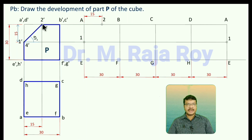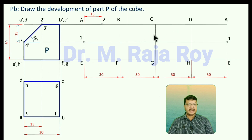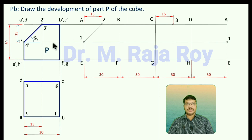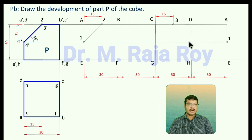For point 3-dash, it is in between CD. From C, the distance is again 15. From C you mark 15 distance and mark point 3. Join points 1 and 2, and 2 and 3. For the fourth point, it is on DH. Along the locus line on DH, you get the fourth point. Mark point 4.